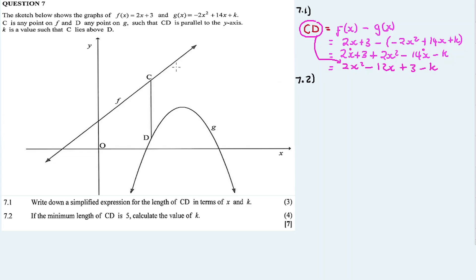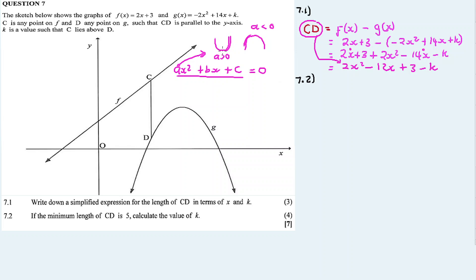The value of A in a parabola tells us whether the graph is concave up or concave down. If A is less than 0, it is concave down. If A is greater than 0, it is concave up. The A in CD is positive, so we have a concave up parabola. A concave up parabola has a minimum value, and a concave down has a maximum. Since we're given the minimum length and A is greater than 0, we have a minimum turning point.